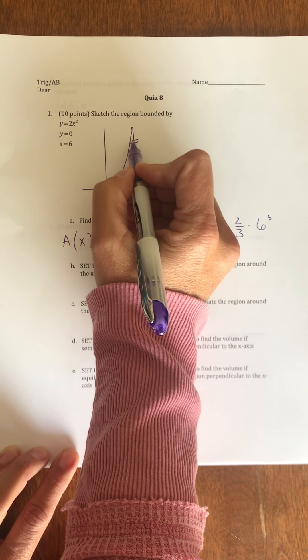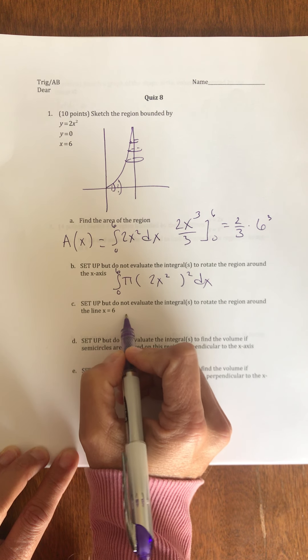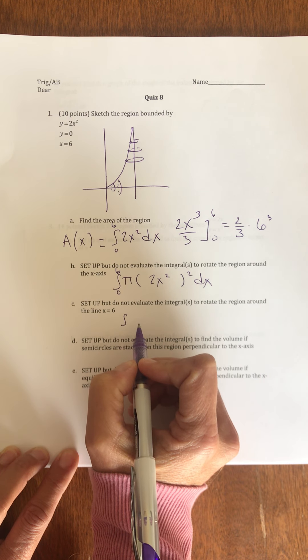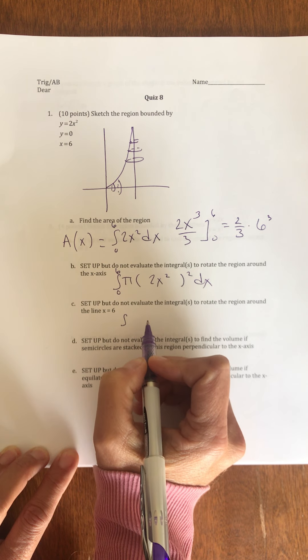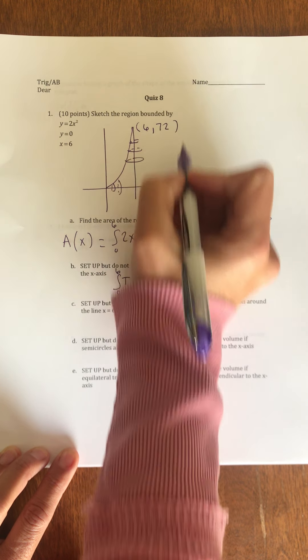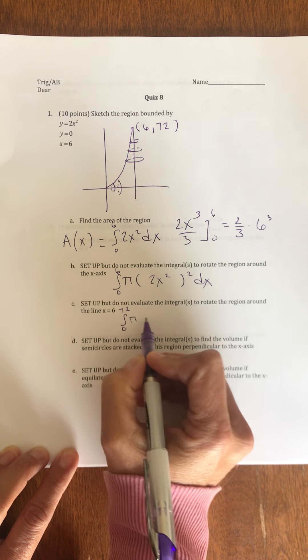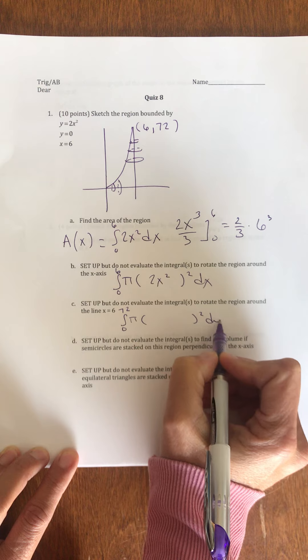To rotate it around x equals 6, we're looking at this tall skinny cone. My volume is going to be stacked in the y-direction. My y-values go from 0, this is the 0.672. So, my y-values go from 0 to 72 of pi r squared in the y-direction.